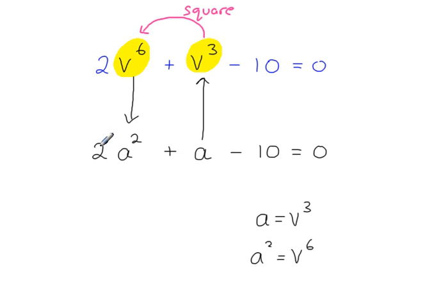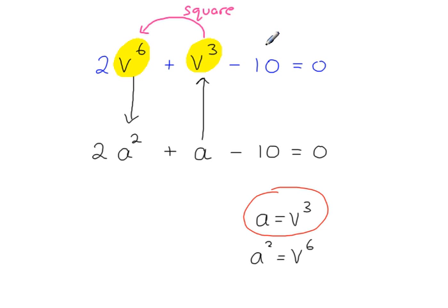I could go on to solve this standard quadratic equation and then undo the substitution at the end. Because this equation is in terms of v, the final solution must be in terms of v. You can't have your final answer as a equals something — it must be v equals something.